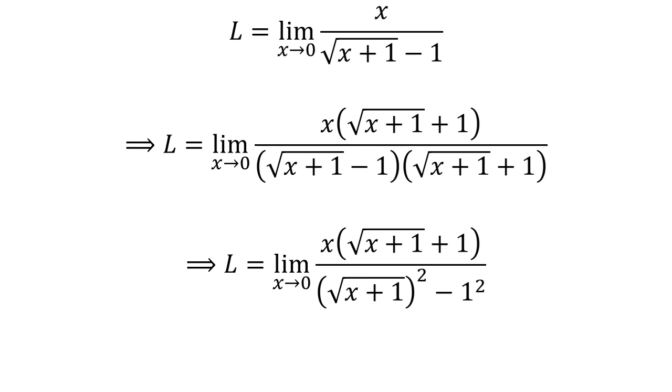Square root of x plus 1 minus 1 times square root of x plus 1 plus 1 equals the square of square root of x plus 1 minus the square of 1. So, L equals the limit of x times square root of x plus 1 plus 1 upon the square of square root of x plus 1 minus the square of 1 as x approaches 0.